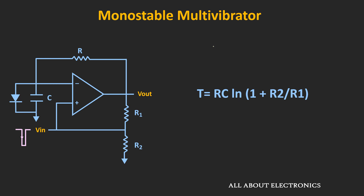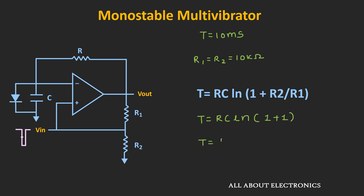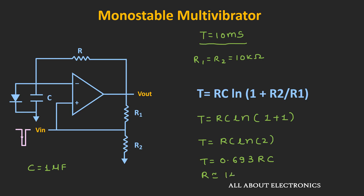Now let's design a monostable multivibrator with a time period t = 10 ms. For simplicity, let's assume R1 = R2 = 10 kΩ. When R1 and R2 are equal, the expression simplifies to t = RC × ln(1 + 1) = RC × ln(2), which gives t = 0.693 × RC. With C = 1 µF and t = 10 ms, the value of R works out to approximately 14.4 kΩ.